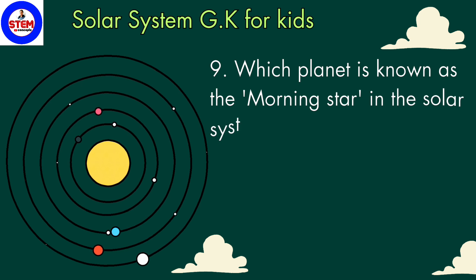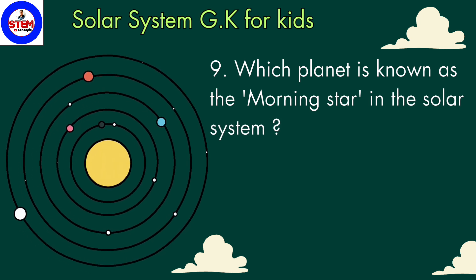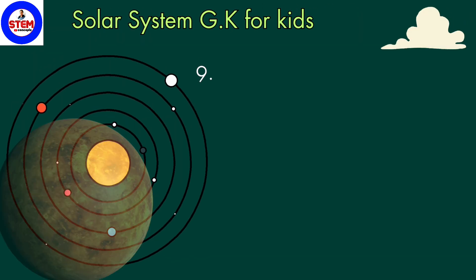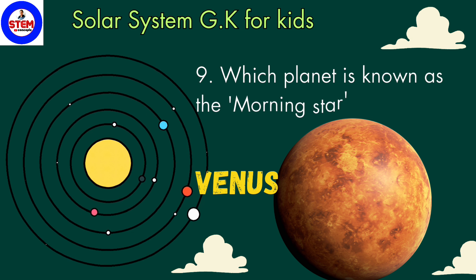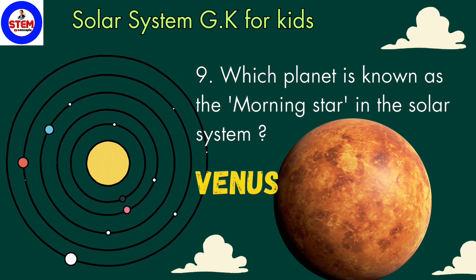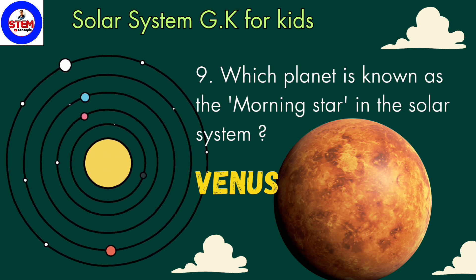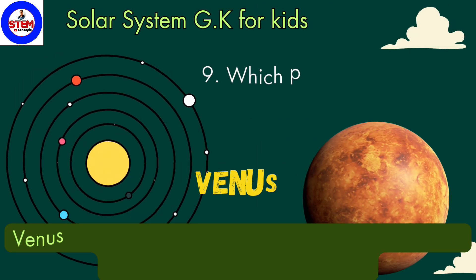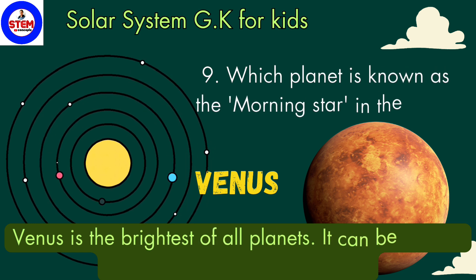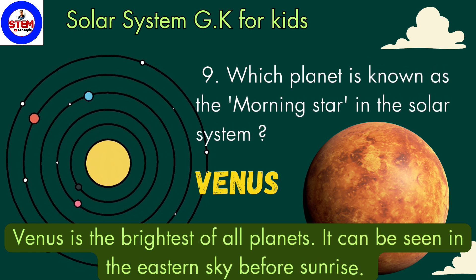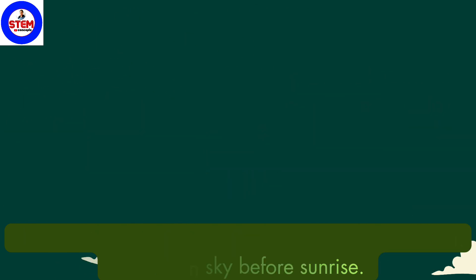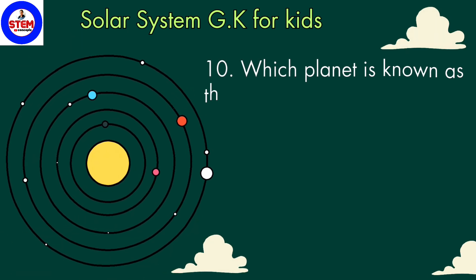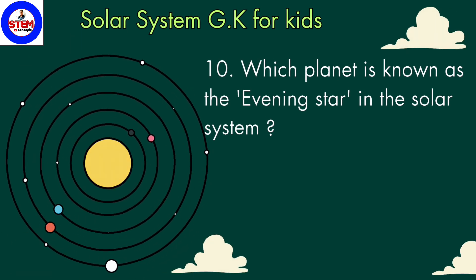Ninth question: which planet is known as the morning star? The answer is Venus. Venus is known as the morning star in the solar system. In order, Venus is the second planet from the sun. Venus is the brightest of all planets, and because it appears as a bright spot it can be seen in the eastern part of the sky before sunrise.